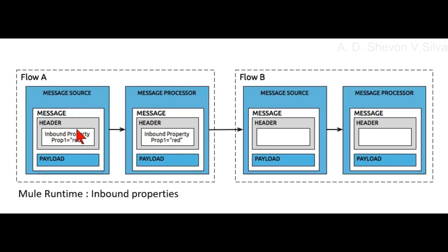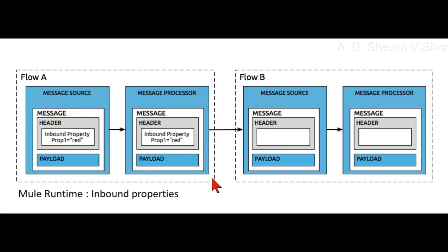See the image here. The inbound property prop1 equals red is in the header, and the payload is in the message. The message source is connected to the message processor. The inbound property prop1 equal red is in the header, and the message source and message processor are in Flow A.